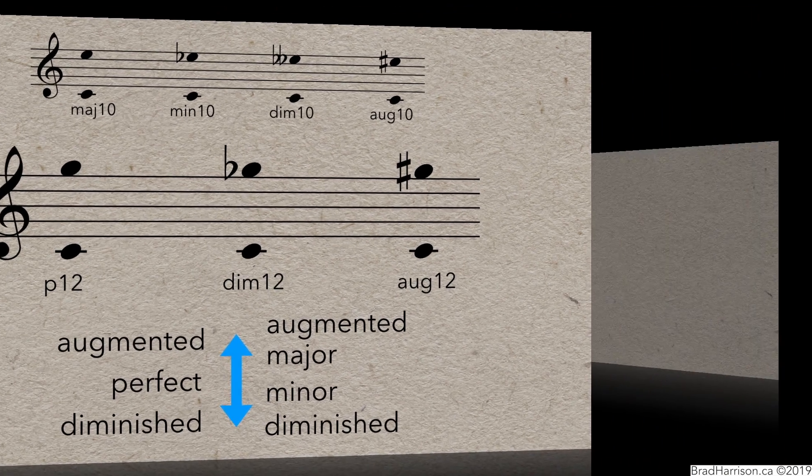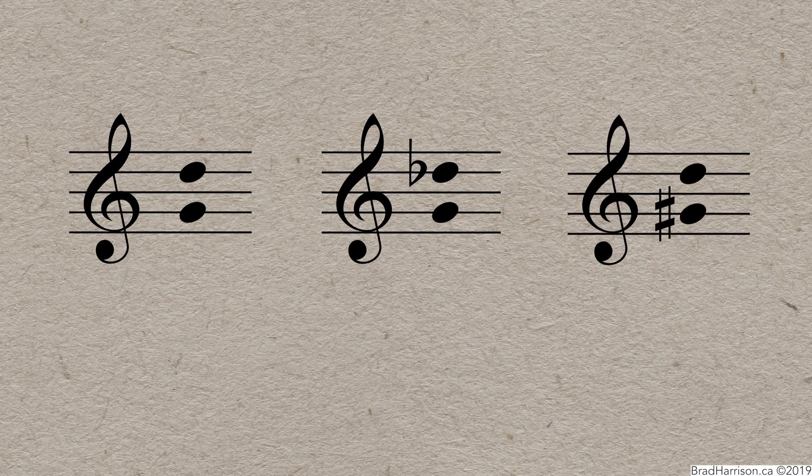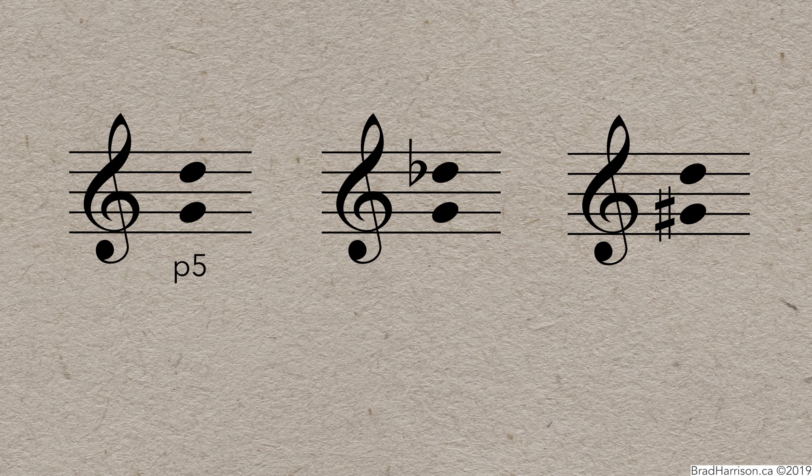Next, since the quality of an interval is based on the major scale of the bottom note, what do we do if the bottom note doesn't have a major scale? First, consider these intervals. The first one is pretty easy. G to D is a perfect 5th.